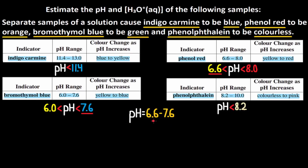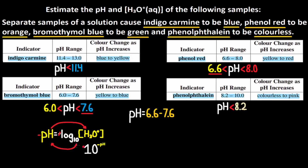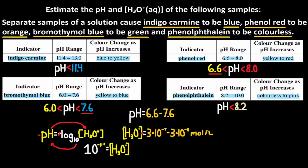Let's check to see if our estimation is correct. Say our pH was 6.8. Is 6.8 less than 11.4? Yes. Is it greater than 6.6? Yes. Is it less than 8.0? Yes. Is 6.8 greater than 6.0? Yes. Is it less than 7.6? Yes. Is 6.8 less than 8.2? Yes. So our pH estimation should be correct. The problem also wants us to find the H3O+ concentration. Remember: 10 to the negative pH equals H3O+. So we do 10 to negative 6.6 and 10 to negative 7.6, and that gives us an H3O+ concentration between 3×10⁻⁷ and 3×10⁻⁸ moles per liter.